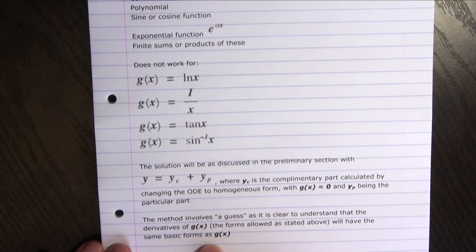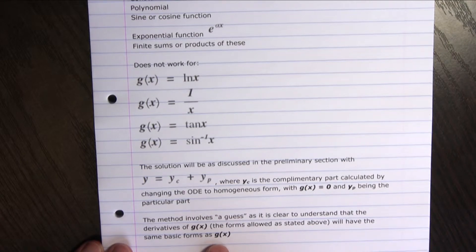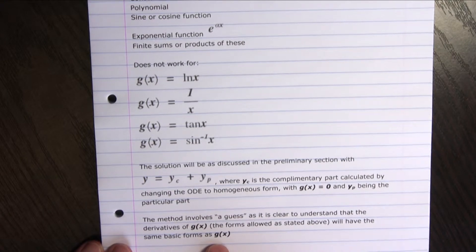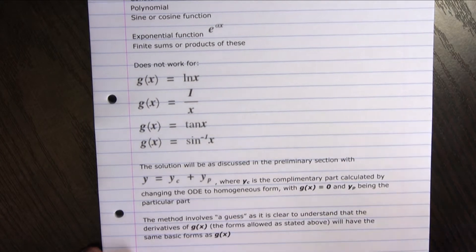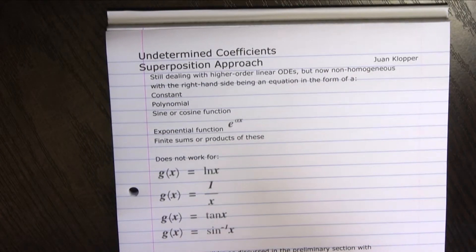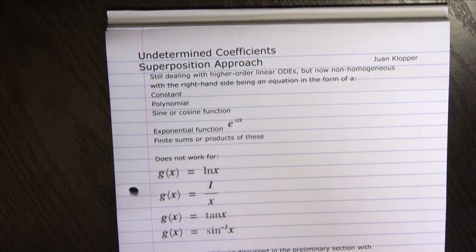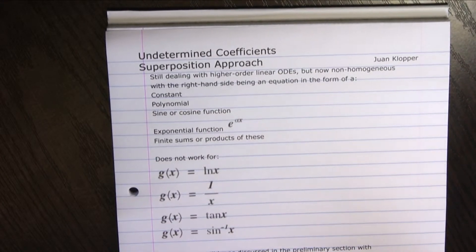So if I have x cubed plus x squared, the first derivative of that is 3x squared plus 2x. It's still a polynomial. And if I have the sine of x, the derivative of that would be the cosine of x. It stays in the same form. And because of that, it's going to help us.